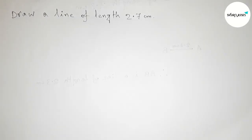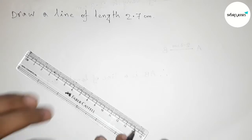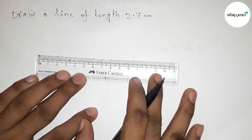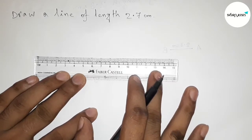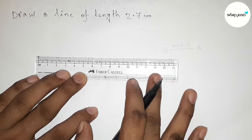First of all, I'm going to use here scale and also I'm going to use pen, but you have to use pencil at home. So first, putting the scale by this way, and next we have to count the length 2.7 centimeter.